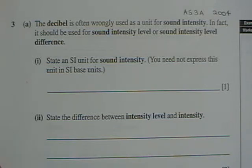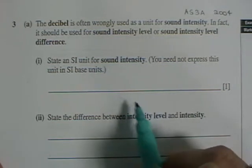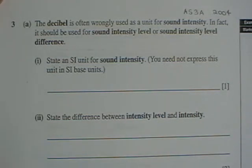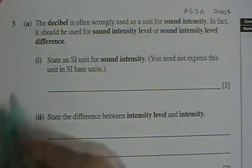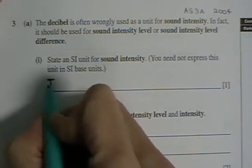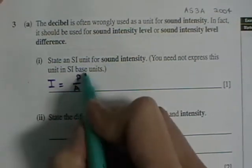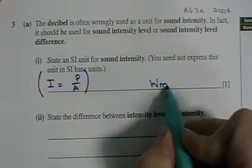State an SI unit for sound intensity. You need not express this unit in SI base units. So you know that intensity is equal to power over area. So we need to get units for that. I'm just writing that in brackets. So suitable units would be watts per meter squared.